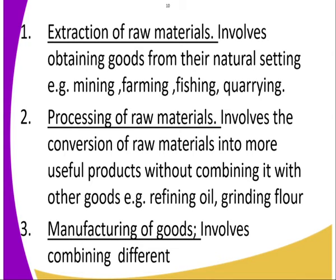Number two is processing of raw materials. This is a secondary process. It involves the conversion of raw materials into more useful products without combining it with other goods. For example, refining oil and grinding flour. Industries are used to process raw materials such as farm products and mining products.